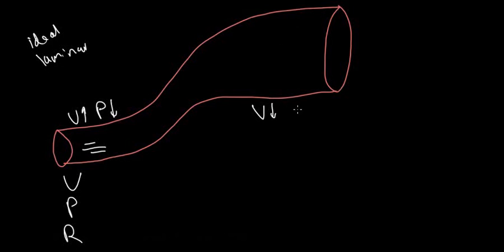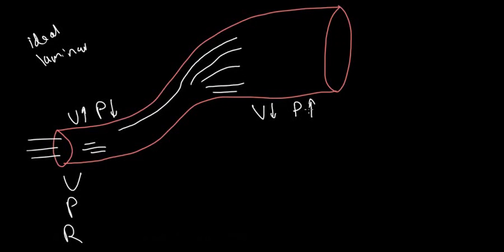Velocity here goes down, the pressure goes up. If you're wondering why, well, we have the same amount of volumetric flow rate or the same amount of fluid flowing here. Here it's going to flow very fast and here it's going to slow down because it fans out. If it slows down, we know the pressure is going up.